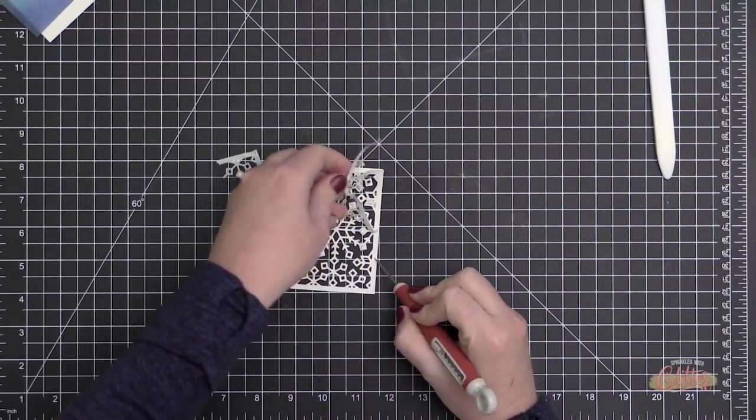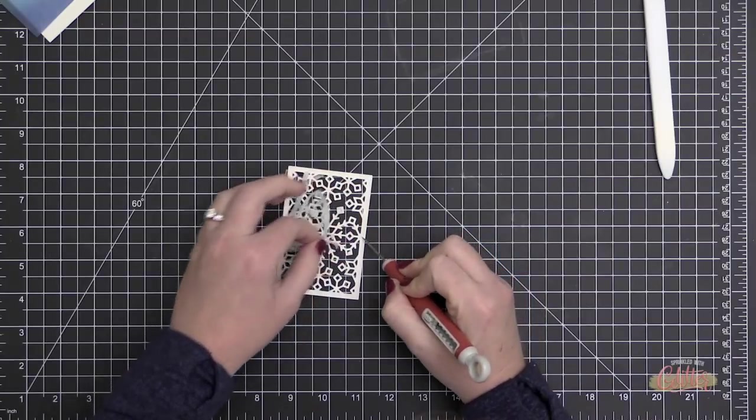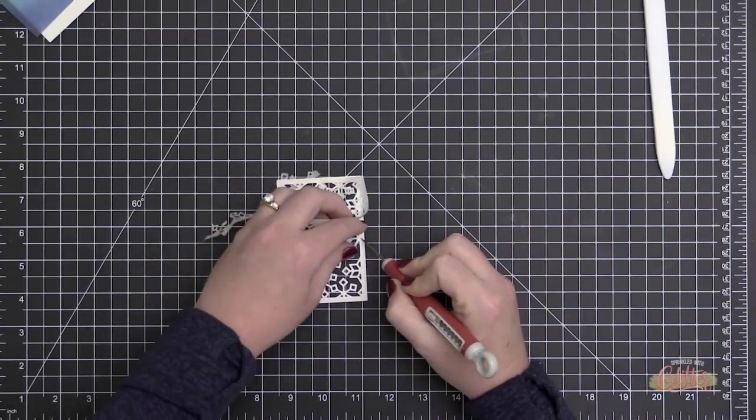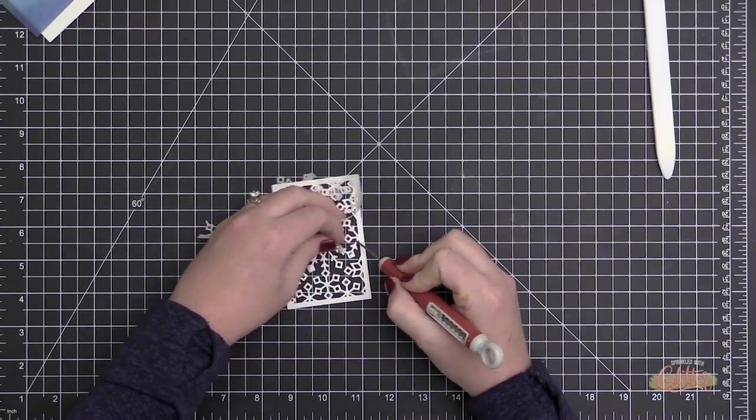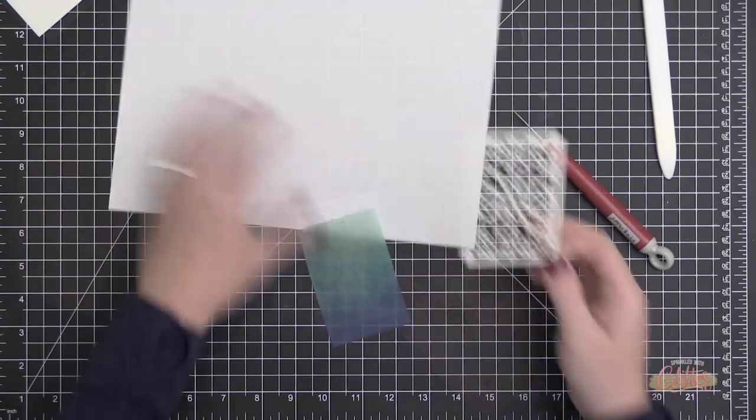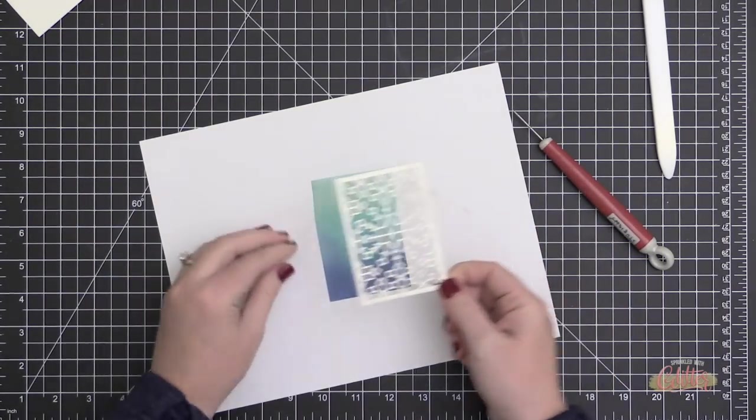Then I hit it with my heat tool again to dry that shimmer spray on top of the cardstock. Now I can take the backer off of this intricate die and that exposes my adhesive.